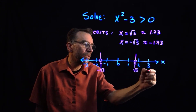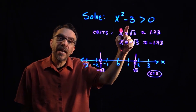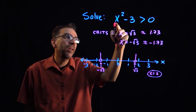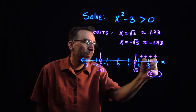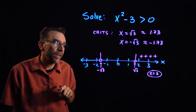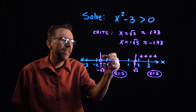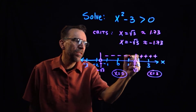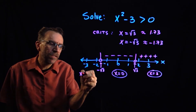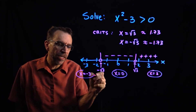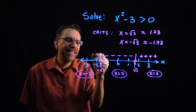It doesn't matter what number you choose. I'll take 3 and substitute into x squared minus 3: that gives 9 minus 3, which is 6 — positive. In the middle region, I'll choose 0: 0 minus 3 is negative 3, so any number there gives negative results. On the far left, I'll test negative 3: negative 3 squared is 9, minus 3 is 6 — positive.